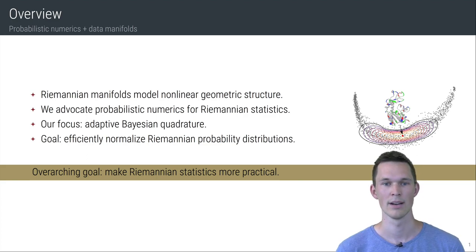In particular, our focus lies on adaptive Bayesian quadrature to efficiently normalize distributions on Riemannian manifolds. This work is embedded in the broader context of making Riemannian methods in machine learning more practical to further their adoption.